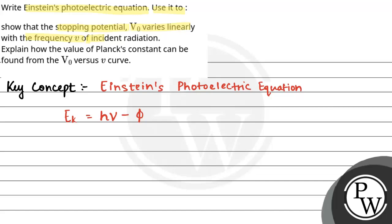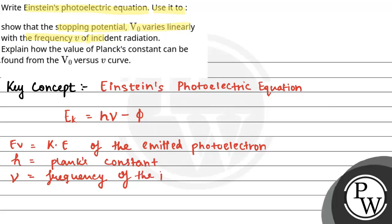Here, this is Ek, which is the kinetic energy of the emitted photoelectron. h is Planck's constant. Here, ν is the frequency of the incident radiation, and φ is the work function of the material.